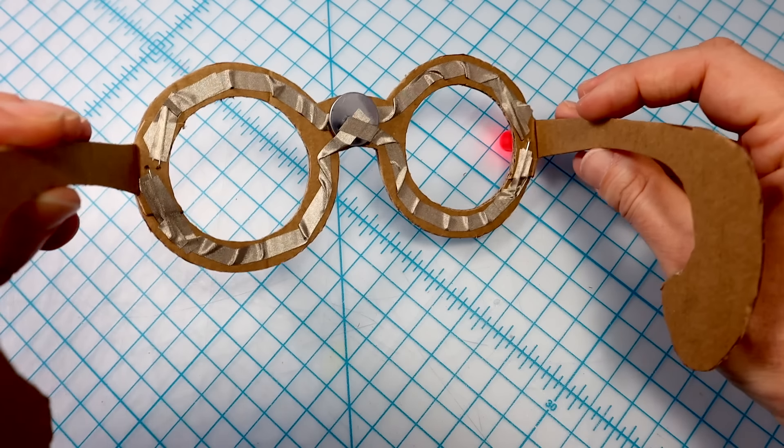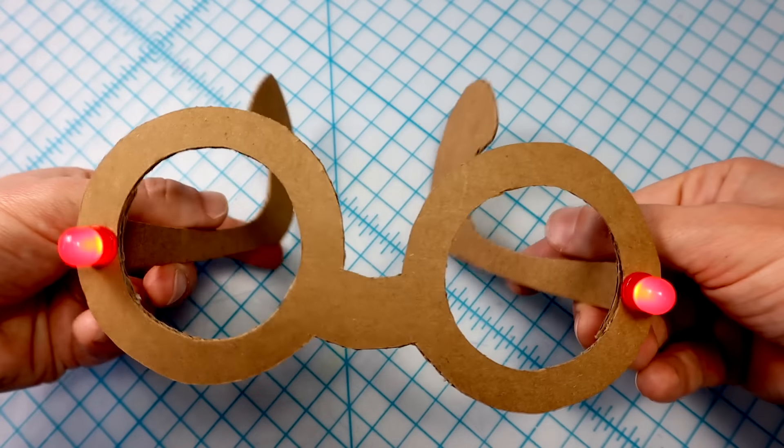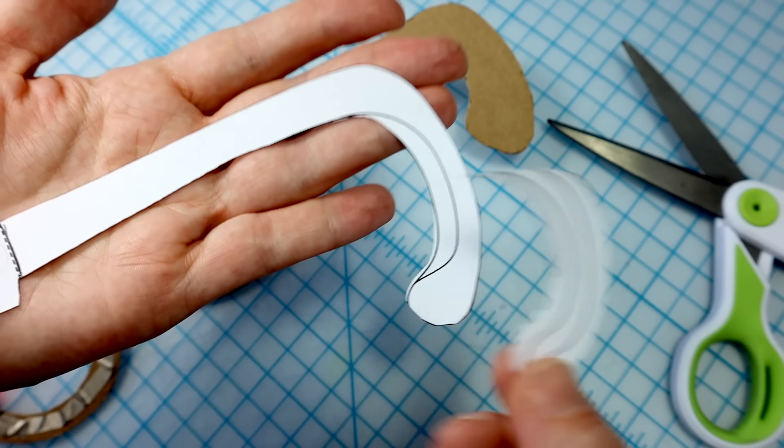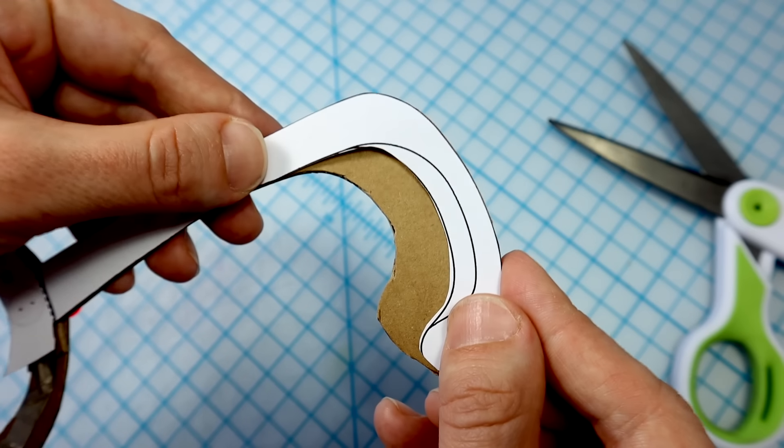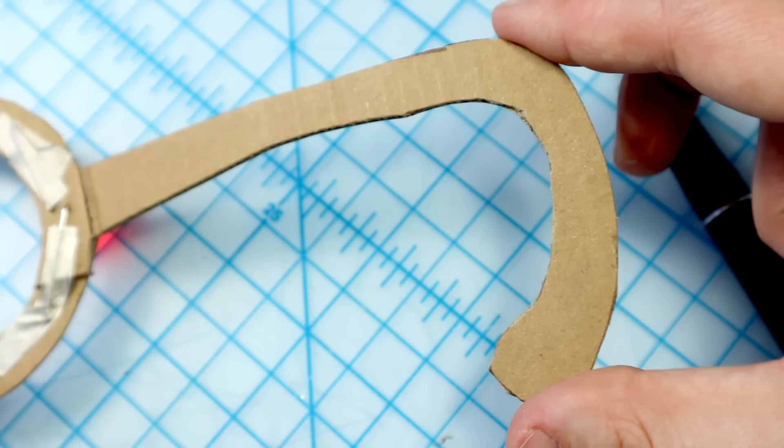Now, try on the frames. They're probably too small. Only the smallest makers fit the default. Choose the size that fits you. Cut the template to size, trace the new line onto the temples, and cut away the extra material.